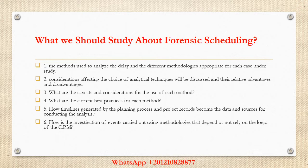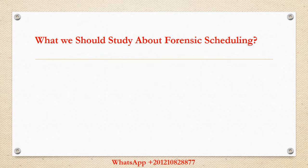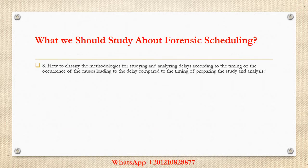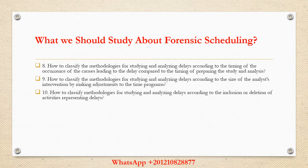7. How to monitor the events that have already taken place in order to understand a deviation or a series of deviations from the plan, and the role of those events in influencing the sequence of tasks within the network of project activities? 8. How to classify the methodologies for studying and analyzing delays according to the timing of the occurrence of the causes leading to the delay compared to the timing of preparing the study and analysis? 9. How to classify the methodologies for studying and analyzing delays according to the inclusion or deletion of activities representing delays?